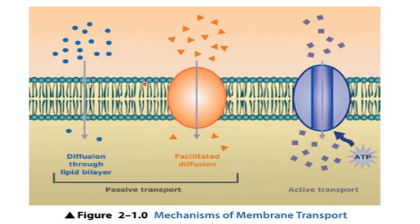Look here — the molecules on the outer side are more, the other side less, so it can pass easily when allowed. Like oxygen and carbon dioxide, these are non-polar molecules, fat-soluble type of molecules — they can easily pass through our cell membrane through simple diffusion. It is a passive type of transport.